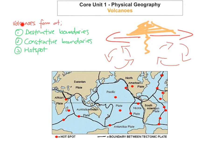The third location we're going to look at is a hotspot, where volcanoes can also form. A hotspot is a place on the Earth's surface where there is a large amount of volcanic activity that is not near plate boundaries. An example you can use is Hawaii — Mauna Loa. What you need to know is that a hotspot involves lots of volcanic activity not near a plate boundary.